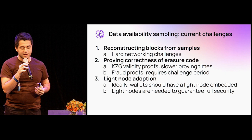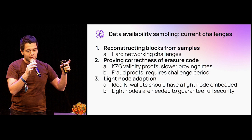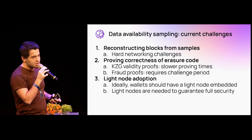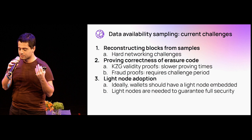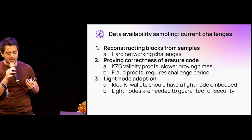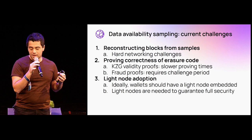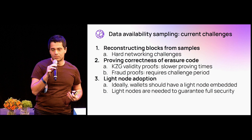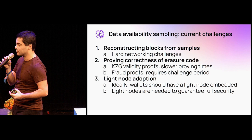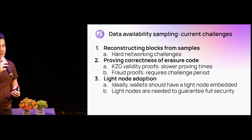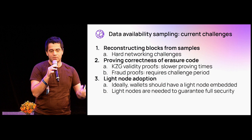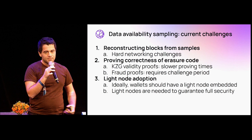The second challenge is proving that the erasure code was constructed correctly. There are two approaches: first, the KZG commitment scheme, which is a validity proof scheme that can prove the erasure code was constructed correctly, but the trade-off is that proving — what's called a KZG opening — is quite slow. The second approach is fraud proofs, which make computing the erasure code and generating proofs faster, but light nodes have to wait a challenge period of usually a few minutes before accepting a block as valid.